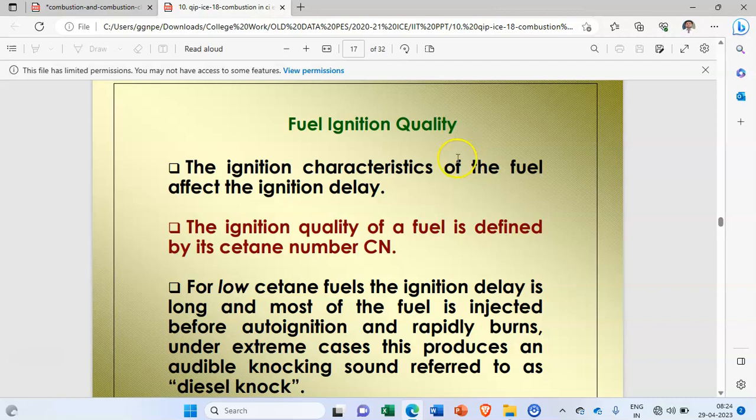What is the cetane number? Fuel ignition quality - the ignition characteristics of the fuel affect the ignition delay. The ignition quality of fuel is defined by its cetane number. Remember in diesel engine, the quality of the fuel is indicated by the number that is called as cetane number.